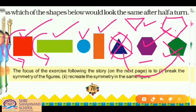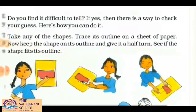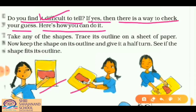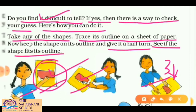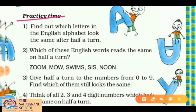Now, page 79: do you find it difficult to tell? If yes, there is a way to check your guess. Take any of the shapes, trace its outline on a sheet of paper, and give it a half turn. See if the shape fits its outline. This is a practical activity you can do at home if you are confused about half turns.